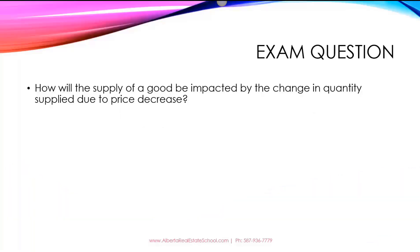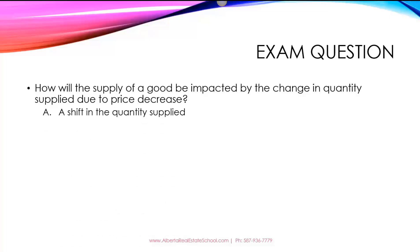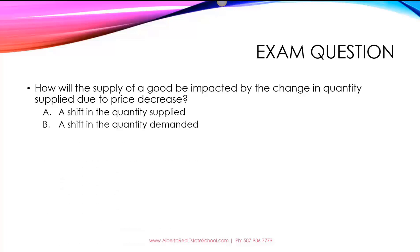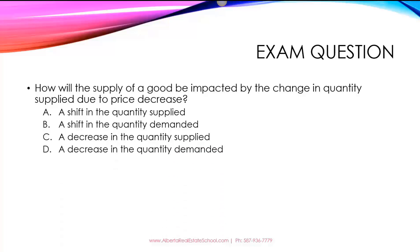Today's exam question is: how will the supply of a good be impacted by the change in quantity supplied due to price increase? And the options are: A, a shift in the quantity supplied; B, a shift in the quantity demanded; C, a decrease in the quantity supplied; or D, a decrease in the quantity demanded.